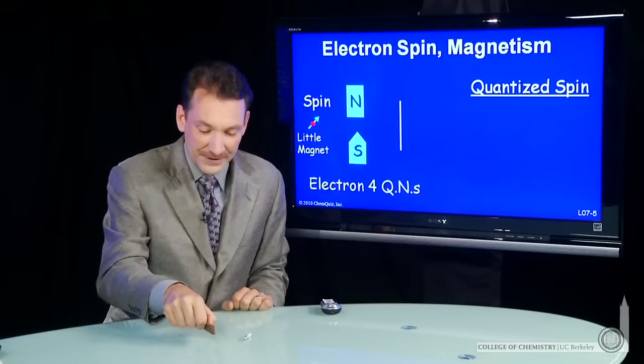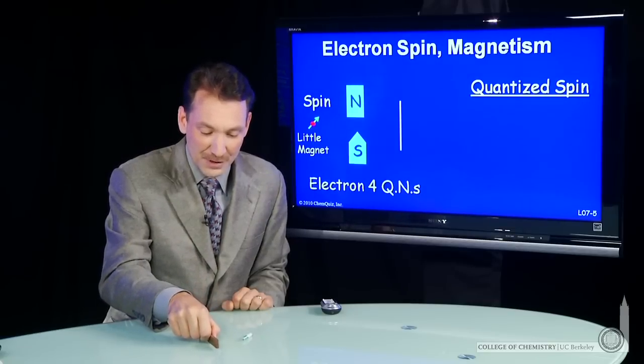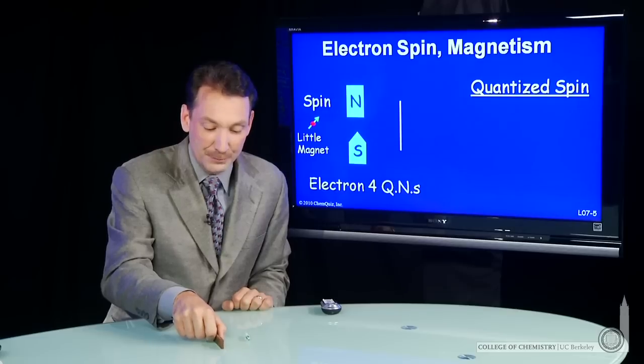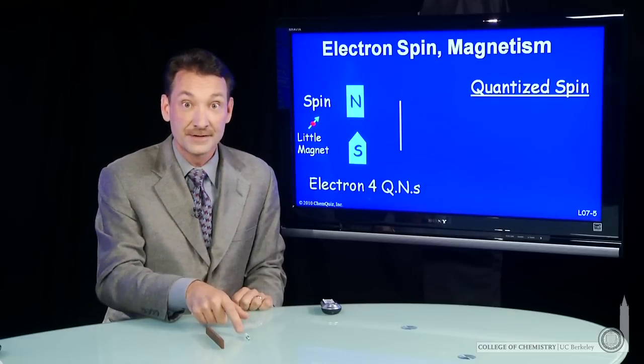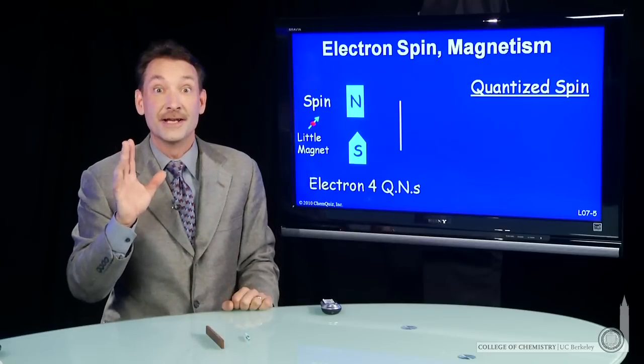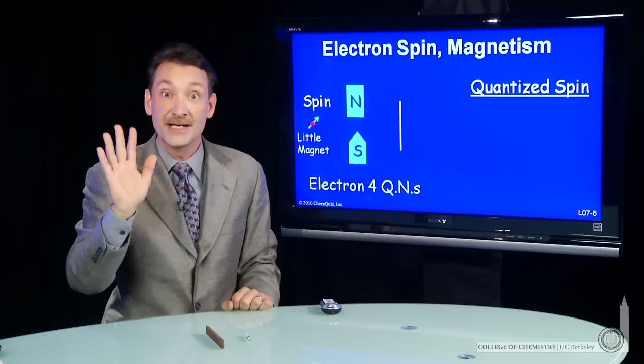If I bring a magnetic field in and say, OK, now I'm going to put you in a magnetic field, now there's a preferred direction for this magnetic stir bar to point. Just like an electron, it has a preferred direction in a magnetic field.